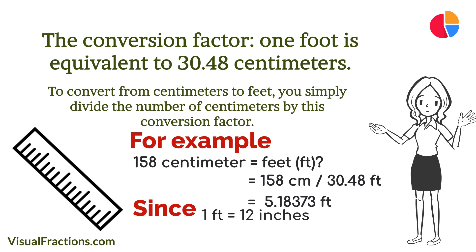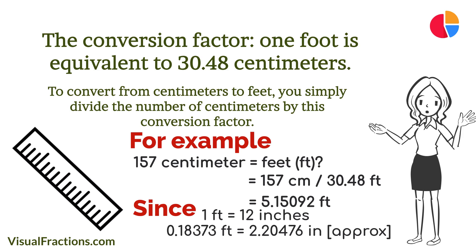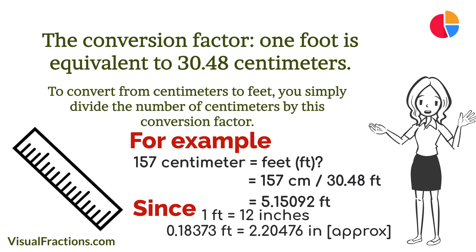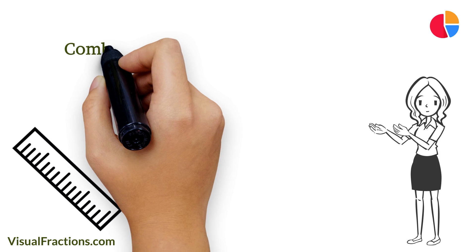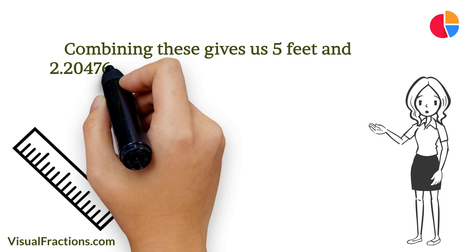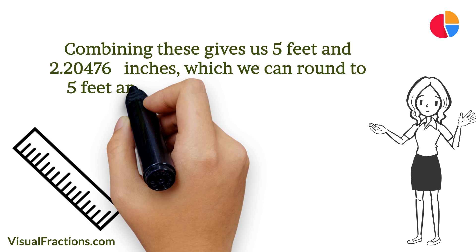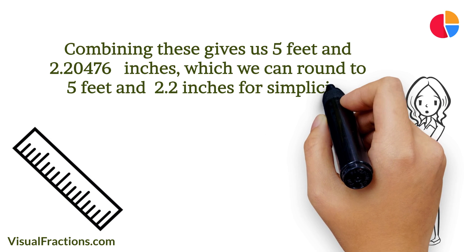Since one foot contains 12 inches, we'll convert the fractional part into inches by multiplying it by 12. Thus, 0.18373 feet is approximately 2.20476 inches. Combining these gives us 5 feet and 2.20476 inches, which we can round to 5 feet and 2.2 inches for simplicity.